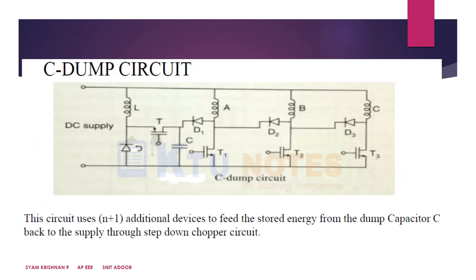The last one is the C Dump circuit. This circuit uses N plus one additional devices to feed the stored energy from the dump capacitor back to the supply through a step-down chopper circuit.